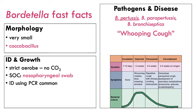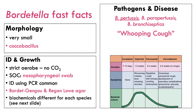Bordetella pertussis is often identified using PCR because it's very virulent and easy to become sick from exposure. There are two special agars: Bordet-Gengou agar and Regan-Lowe agar — we'll discuss what makes those special. Different biochemical reactions distinguish the three Bordetella species — you can compare them based on oxidase, motility, urease, and whether they grow on MacConkey agar, and each has a unique enough pattern to help with identification.